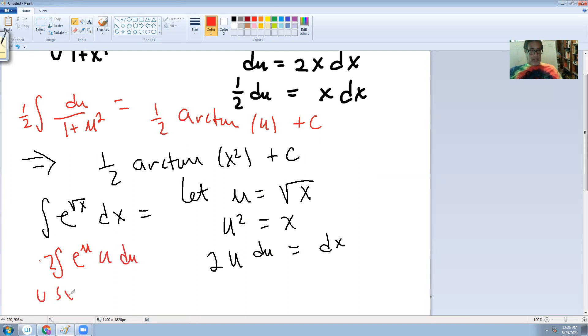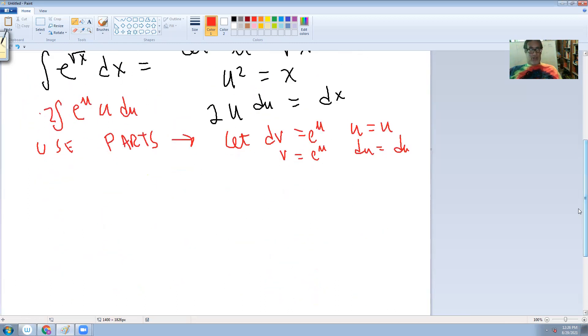And then use parts. So we use parts. I shouldn't have used u here, but I did anyway. So let dv equal e to the u and u equal u. Then v is e to the u and du is just du. Kind of lame, but should have used different letters.